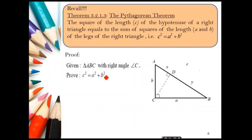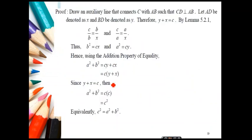We can use Theorem 5.2.2 and Lemma 5.2.1 to prove the Pythagorean theorem, which states that C squared equals A squared plus B squared, where C is the hypotenuse and A and B are the legs. Please note in the proof: C over A equals A over Y — make sure to write Y, not X — and then you can follow the rest of the proof.